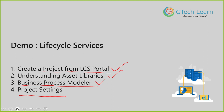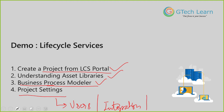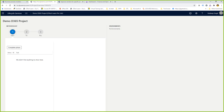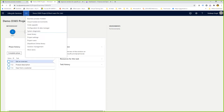Last but not least, let's talk about project settings. When I talk about project settings, you can associate users with your project, configure integrations such as DevOps and SharePoint library, and set up your Azure connector to deploy cloud-hosted environments. Let me go to my LCS portal and open the newly created Demo D365 project — the empty project we created, to which we added a few BPM libraries and customized them.